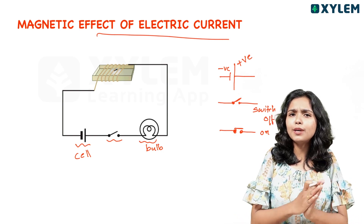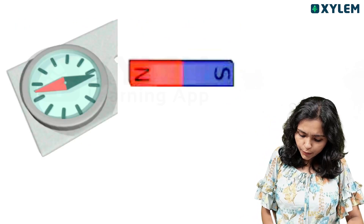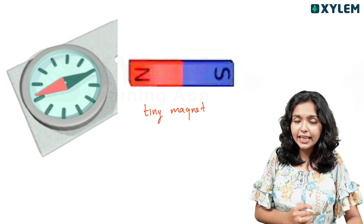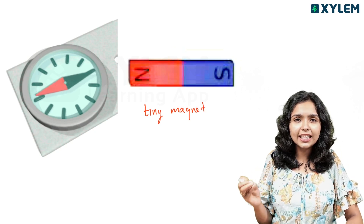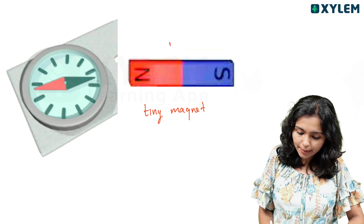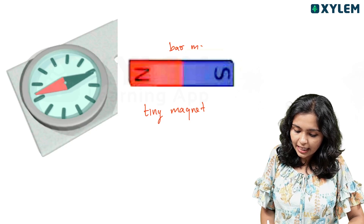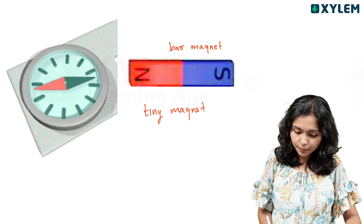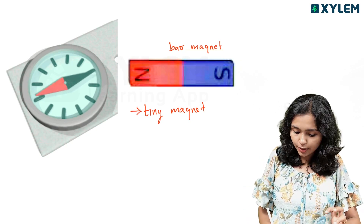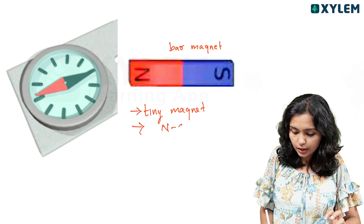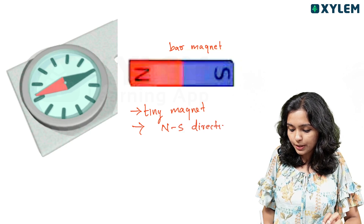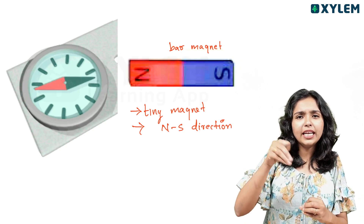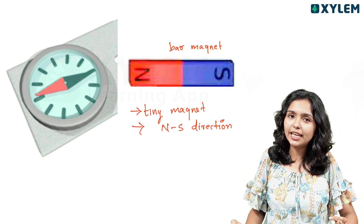We are going to observe the magnetic needle. A tiny magnet is called a magnetic needle. It is also called a bar magnet. When the magnet is freely suspended, it aligns in the north-south direction. You can observe the deflection.